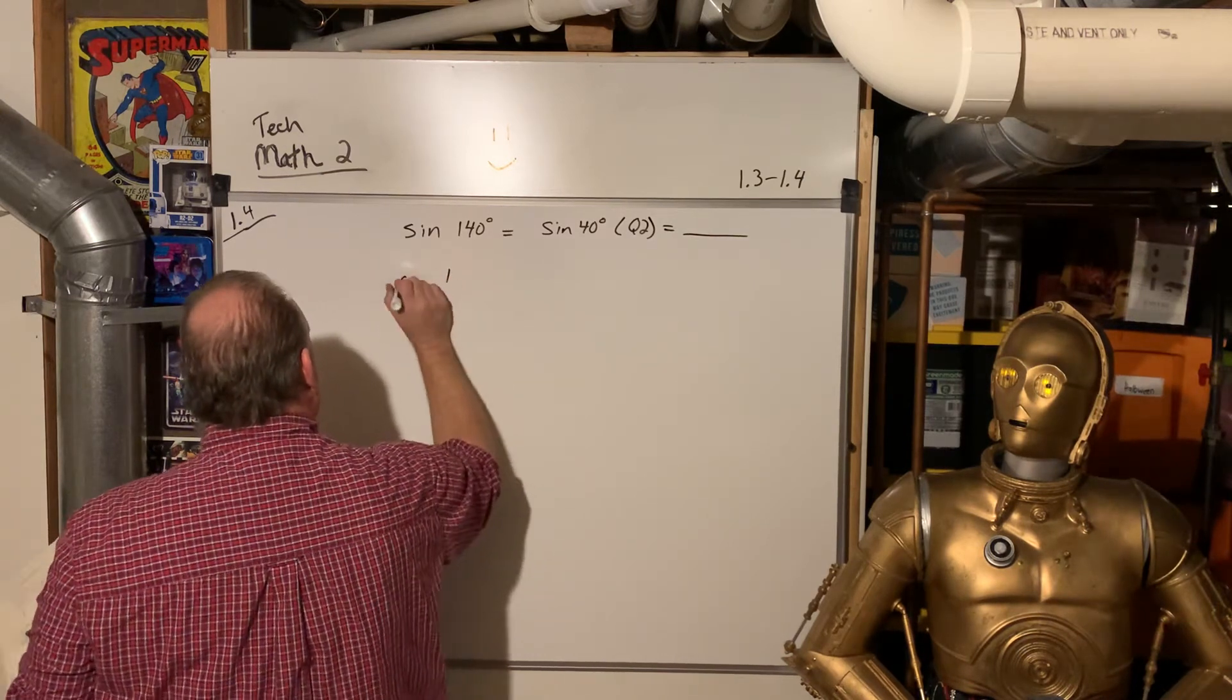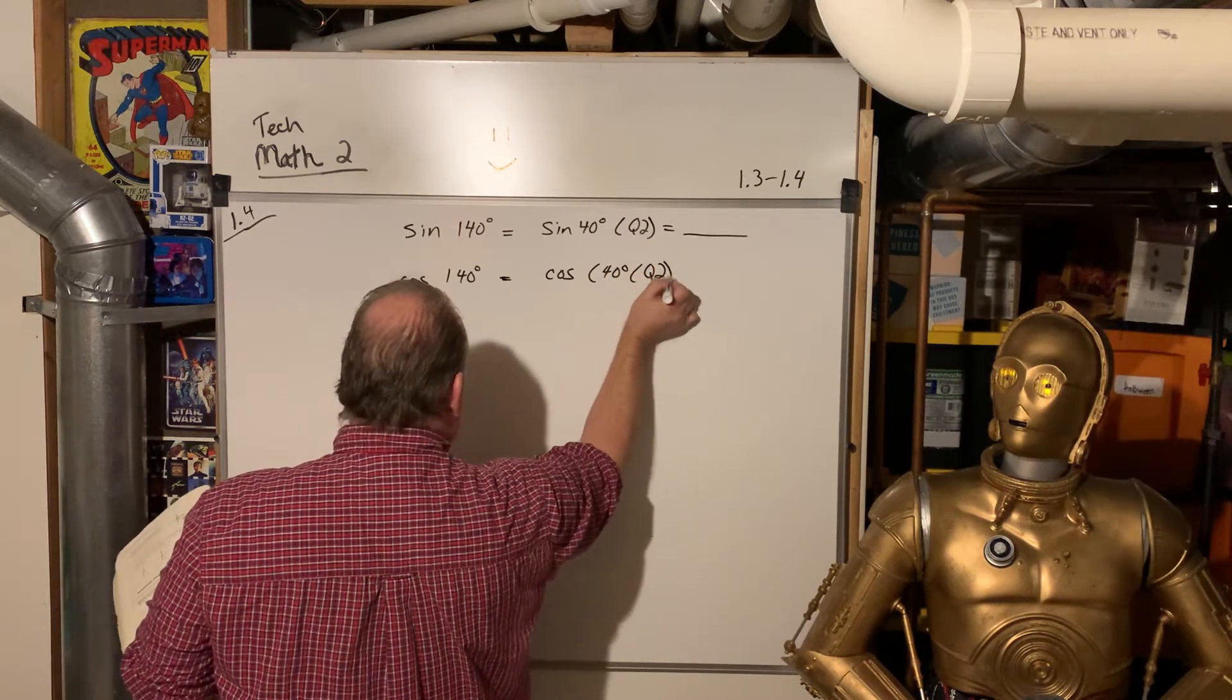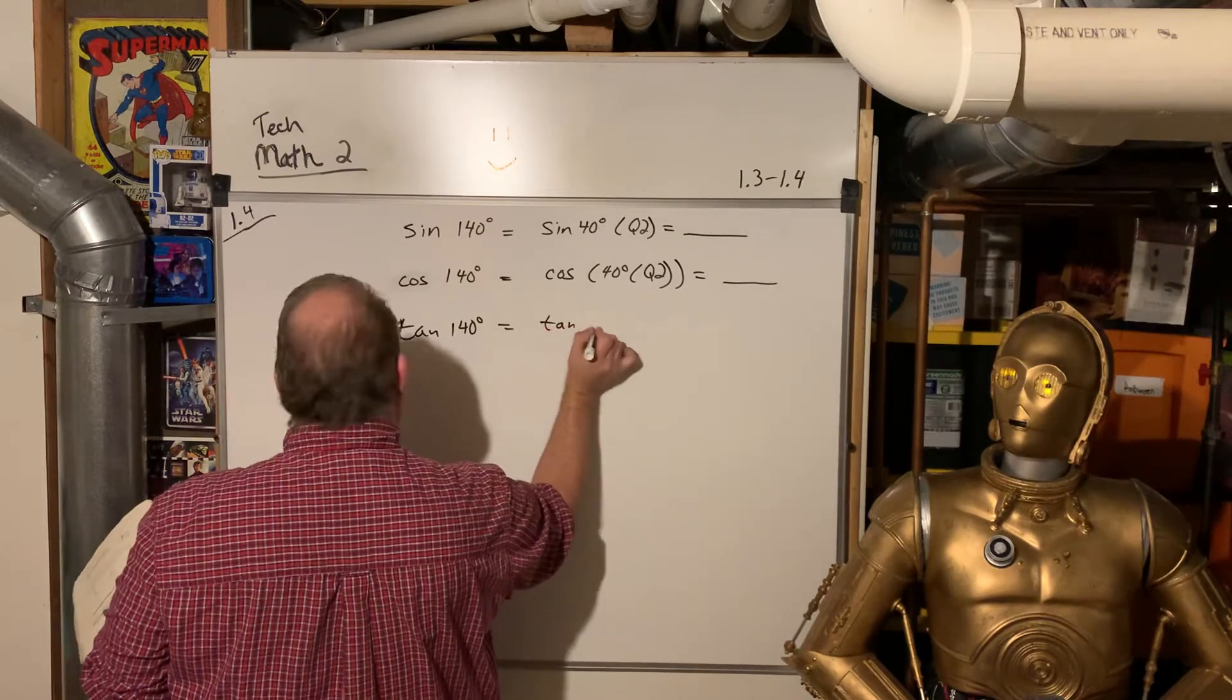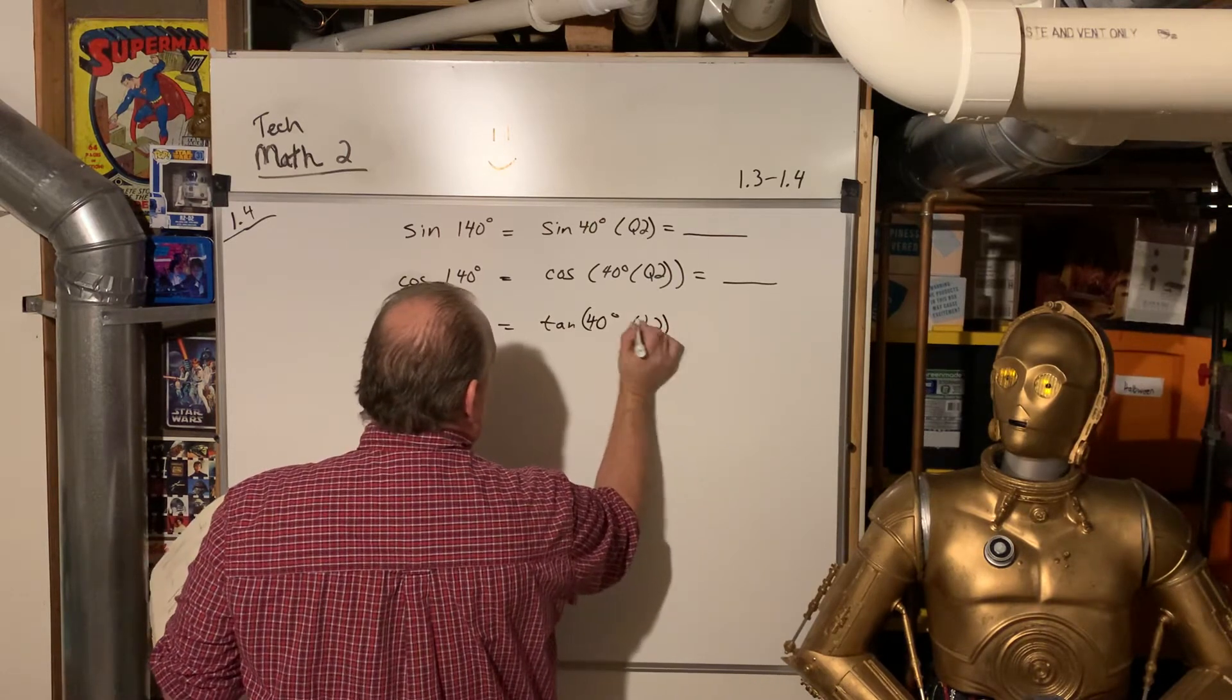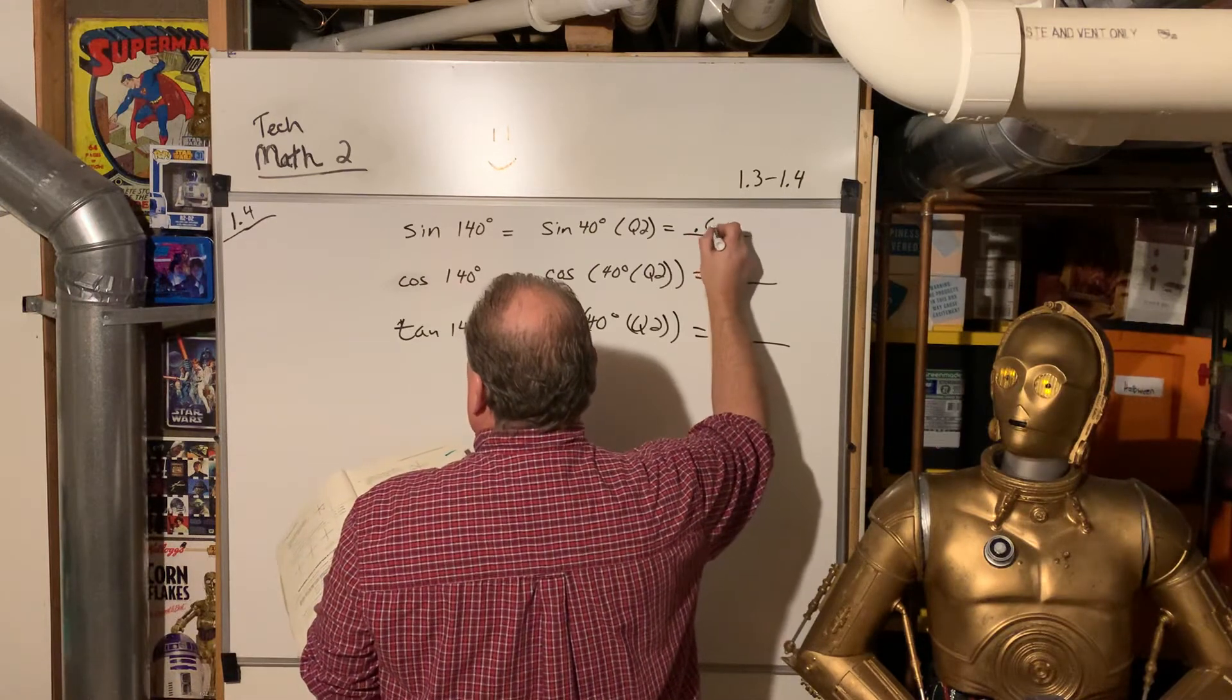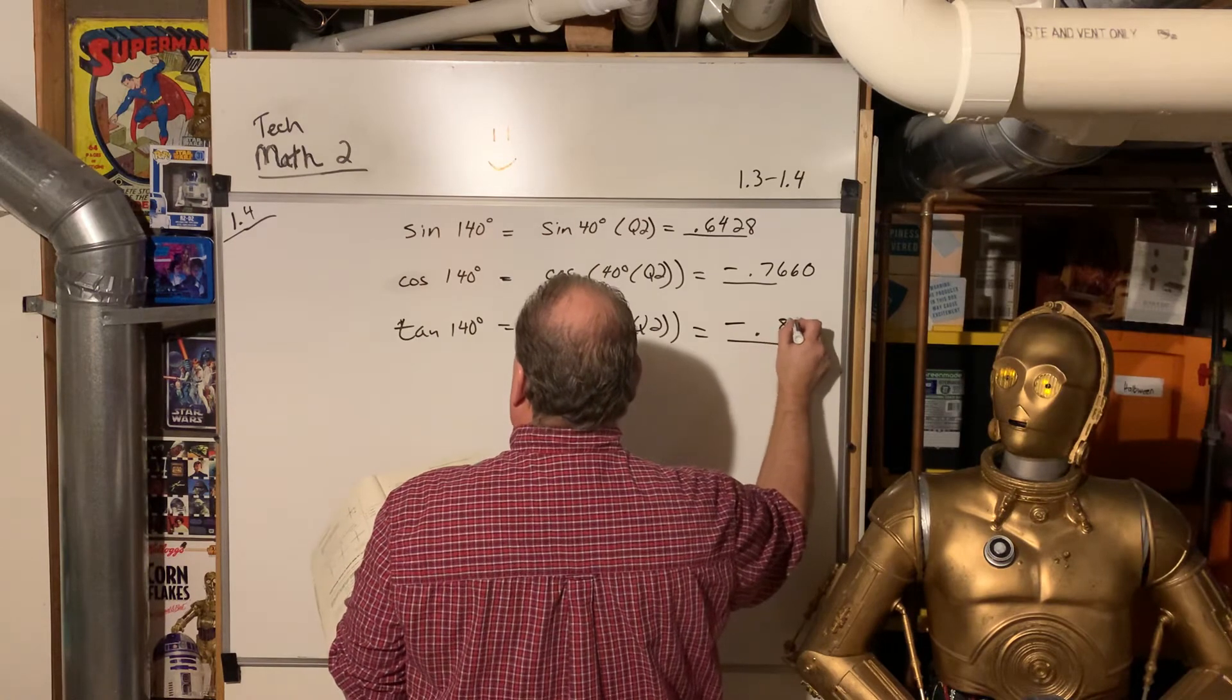and it says that's the same as the sine of 40 degrees in the second quadrant. Cosine of 140 is the same as the cosine of 40 in the second quadrant. And the tangent of 140 is the same as the tangent of 40 in the second quadrant. So now look, what are they doing here? If you just put it in sine 140, cosine 140, and tangent 140, this is what your calculator will kick out. This will be 0.6428, this will be negative 0.7660, this will be negative 0.8391.